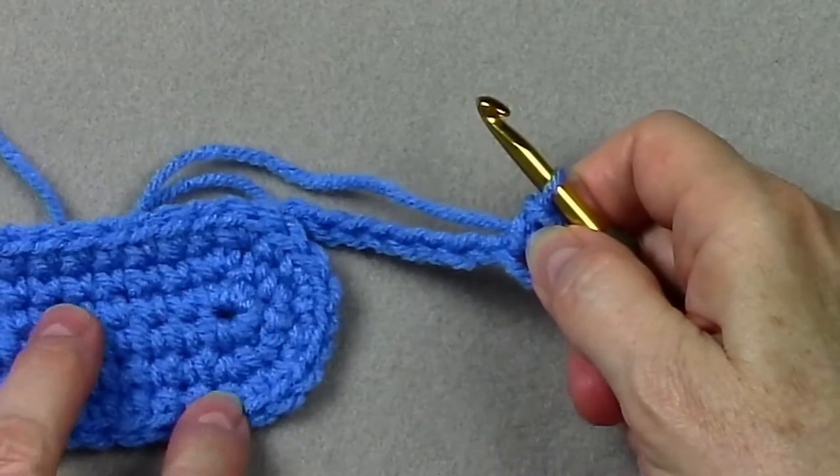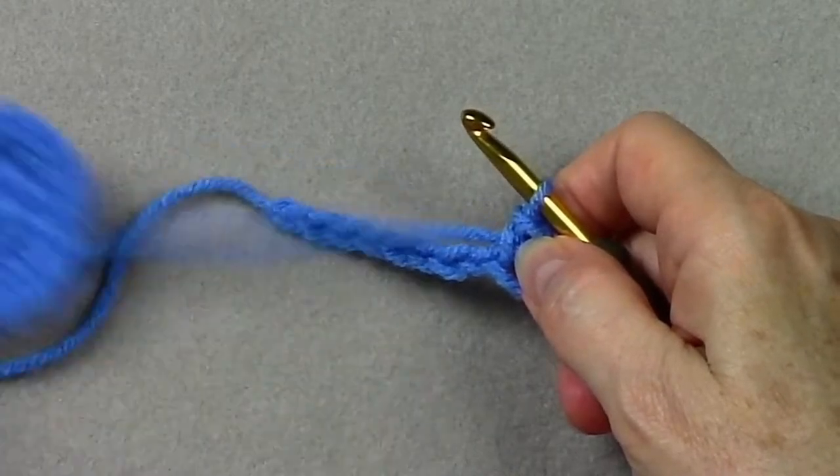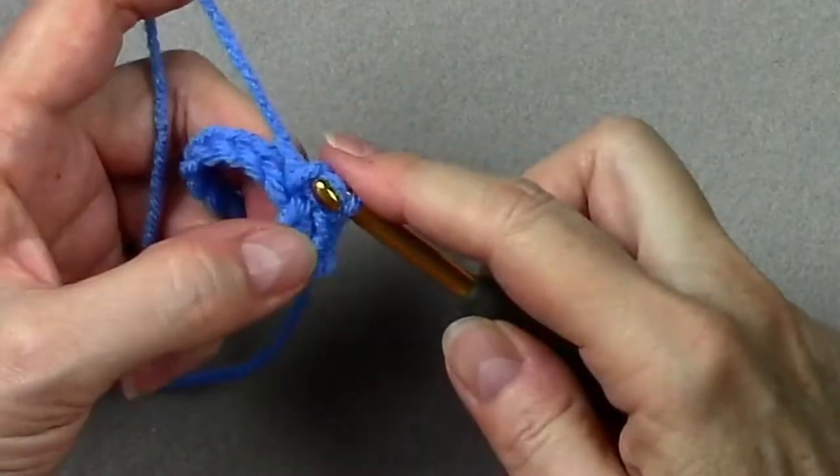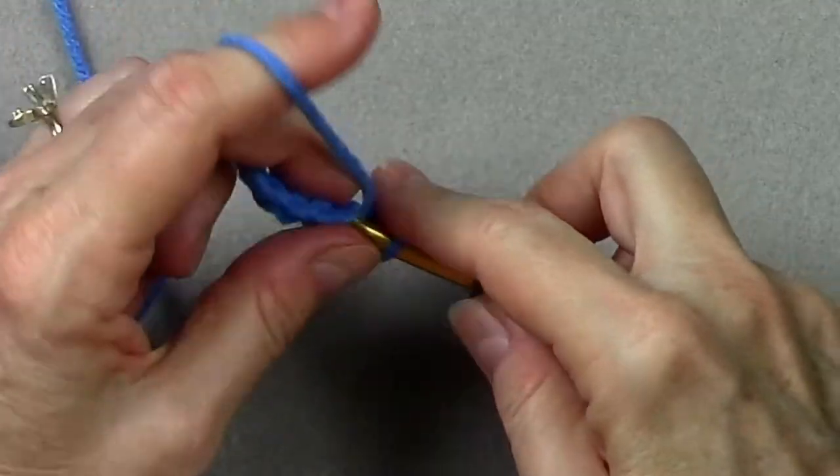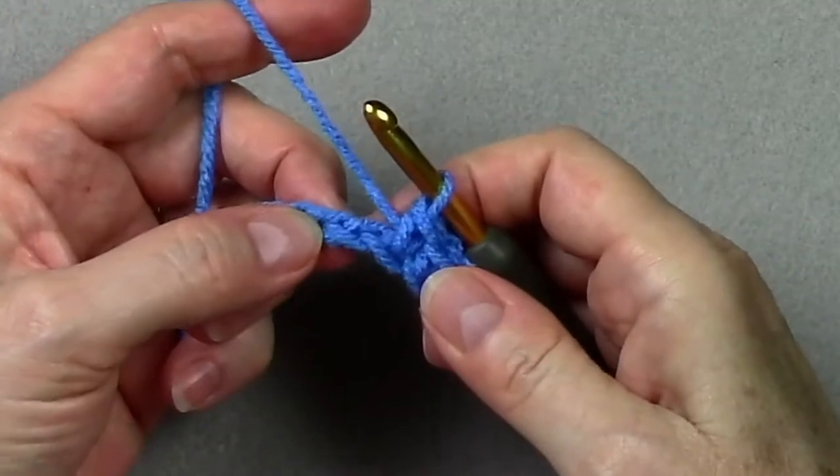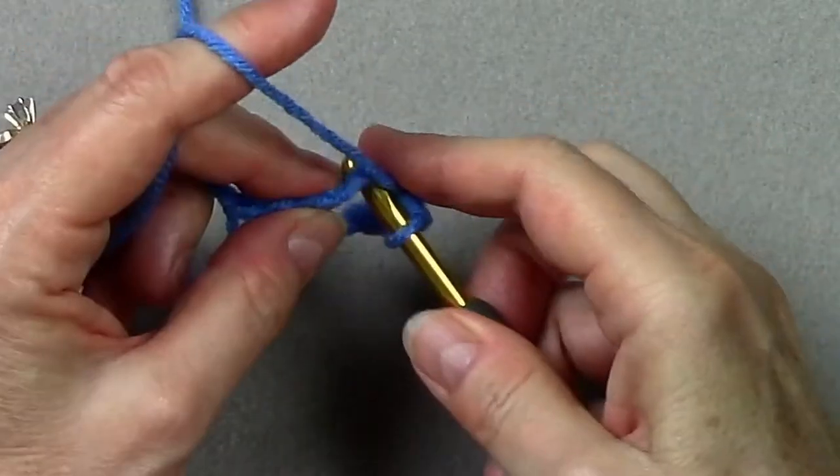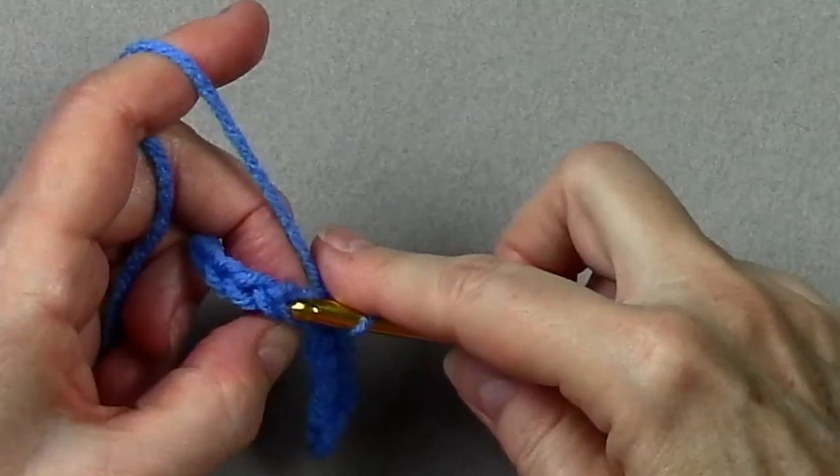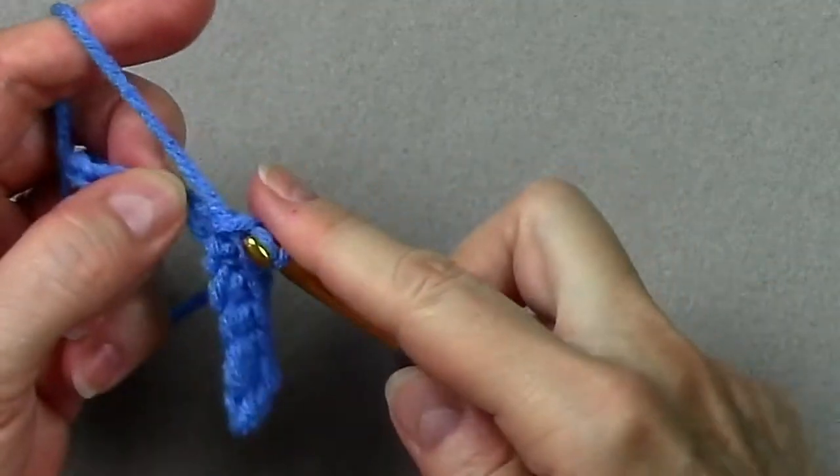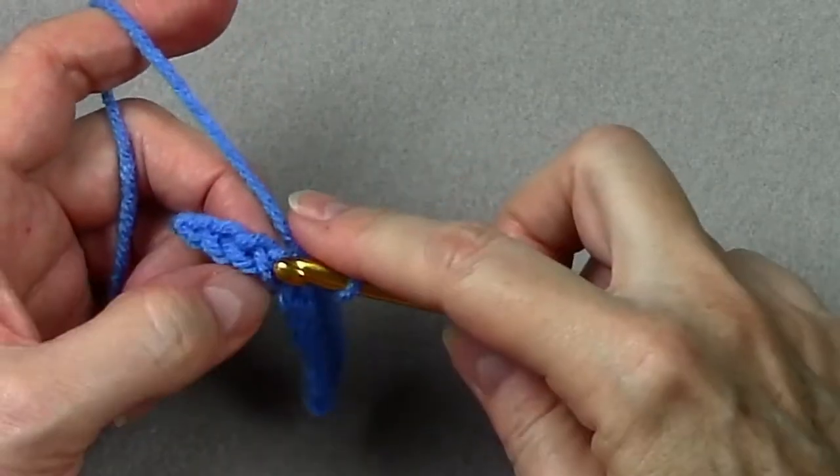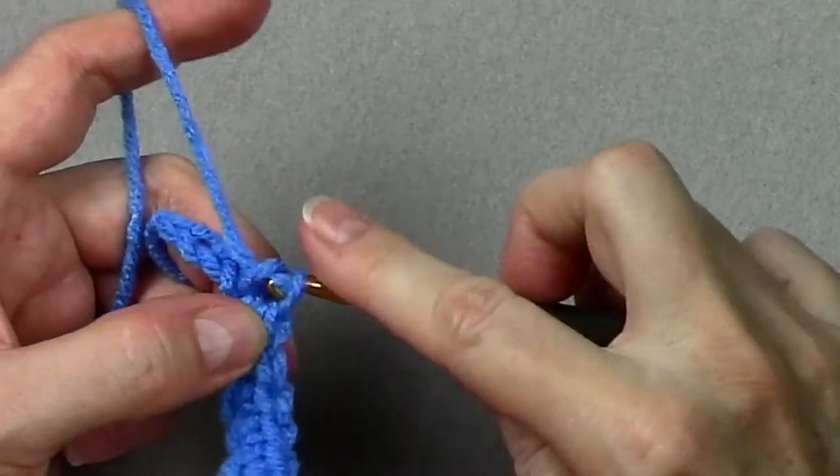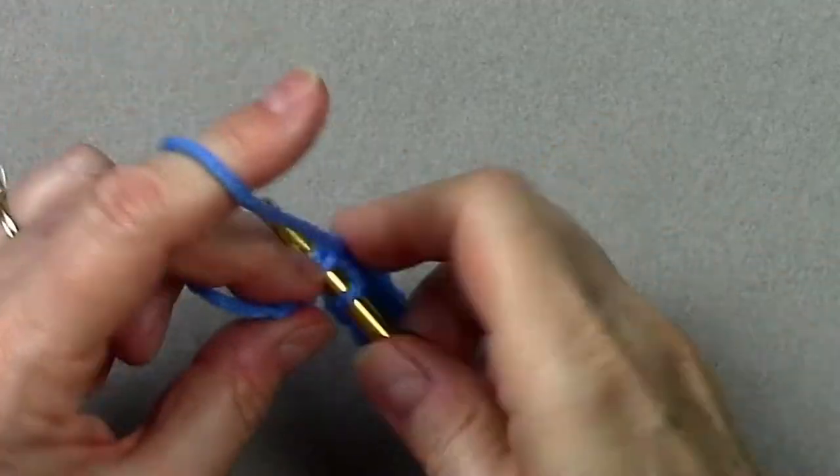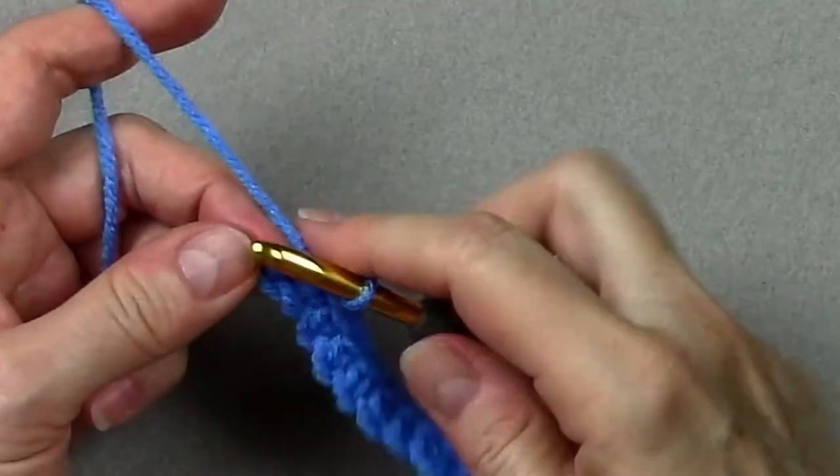Now ovals are always worked with even stitches in the middle. So we'll work one single crochet in each of the next seven chains. And I'm still inserting my hook under two strands of the chain, the top strand and the back strand, so that all of my chains and my single crochets will be even. That will give me one loop of my chain at the bottom, which is not worked into yet. Okay, we've got the three at the beginning and five, so we need two more. And that will bring us to the last chain.